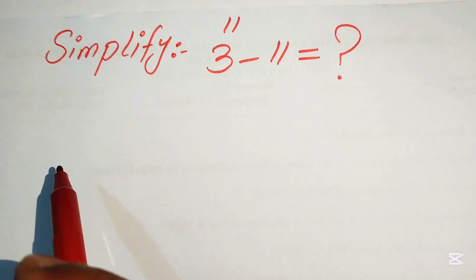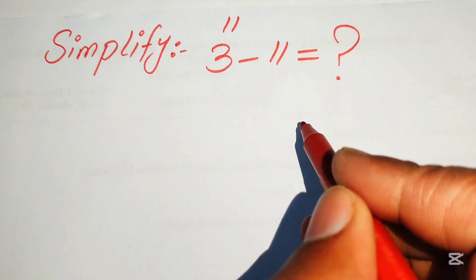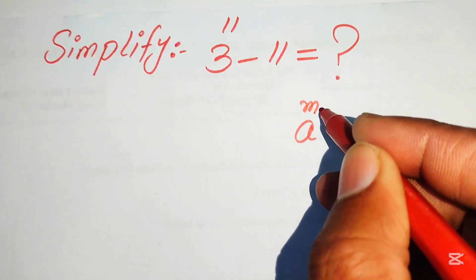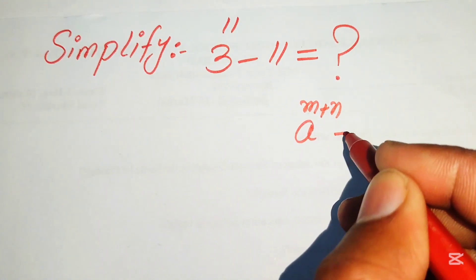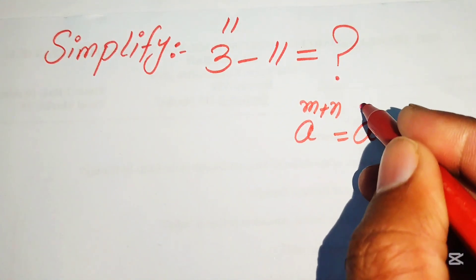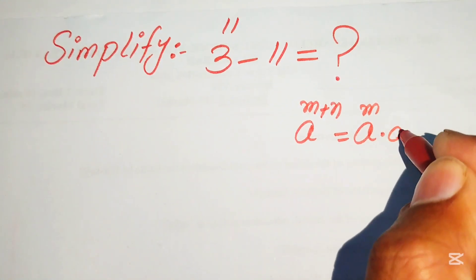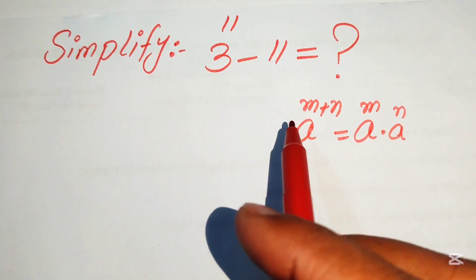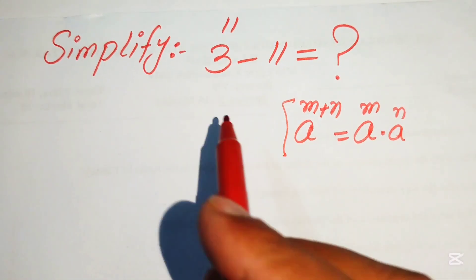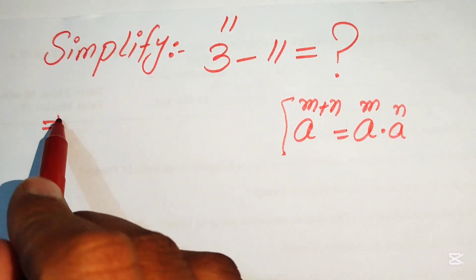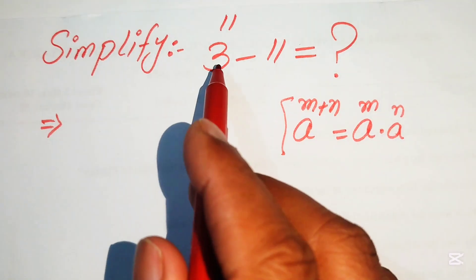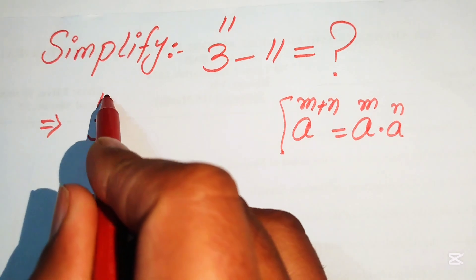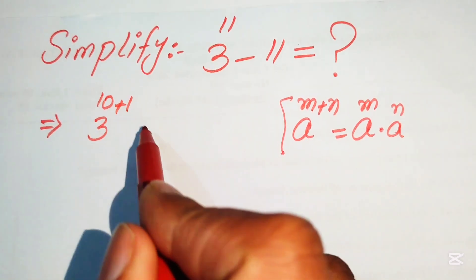The very first step is to use the exponential law. This law states that if we have a to the power of m plus n, it equals a to the power of m times a to the power of n. Using this rule, we first break the exponent and write 11 as 10 plus 1, giving us 3 to the power of 10 plus 1, minus 11.